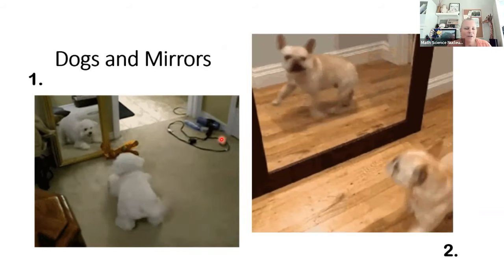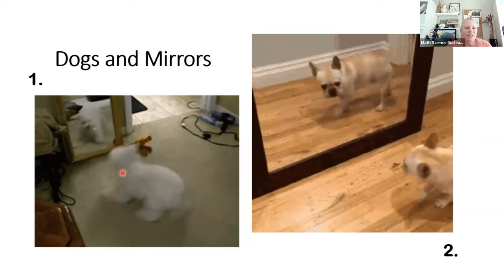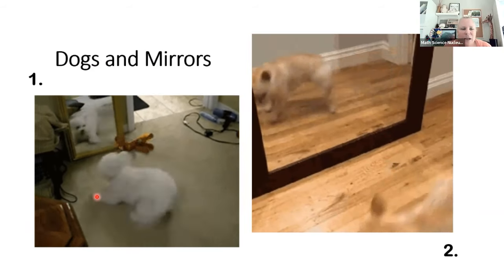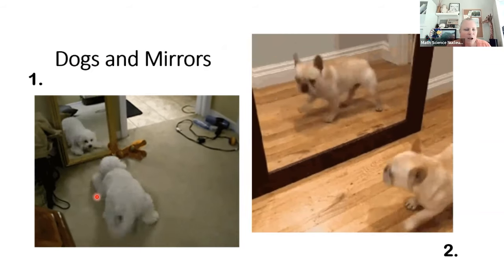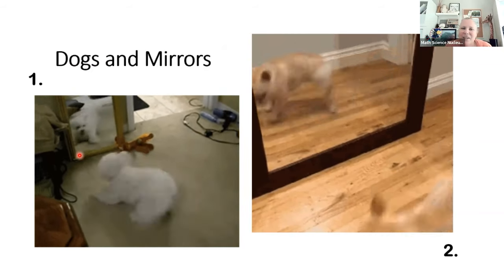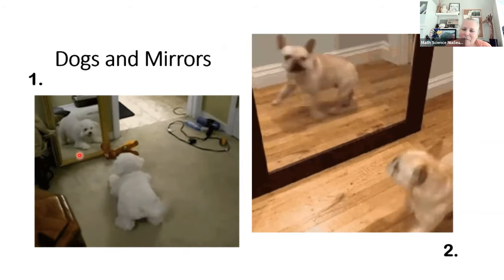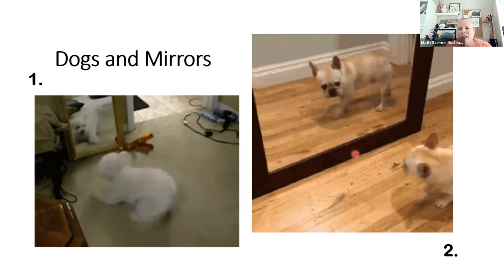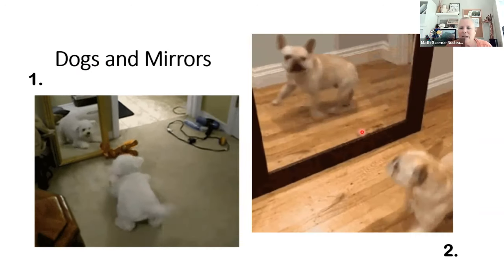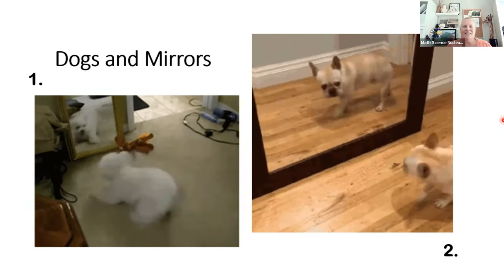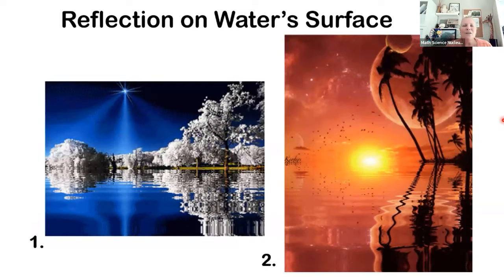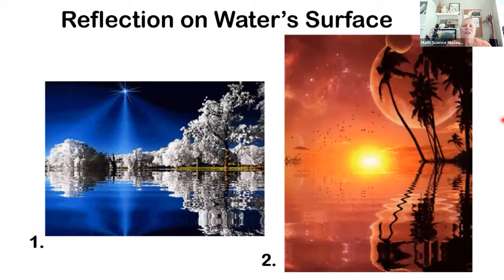Look at these little dogs with mirrors. This little white dog is looking at a mirror thinking he's got another friend to play with — barking and playing, trying to get the other dog to play. But it's just his reflection. This other little dog sees his reflection and gets scared — look how he jumps away. So reflection is sometimes hard to understand.